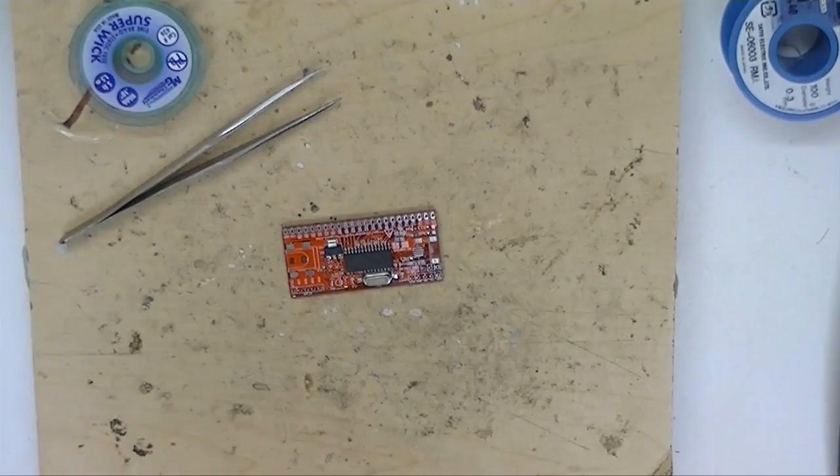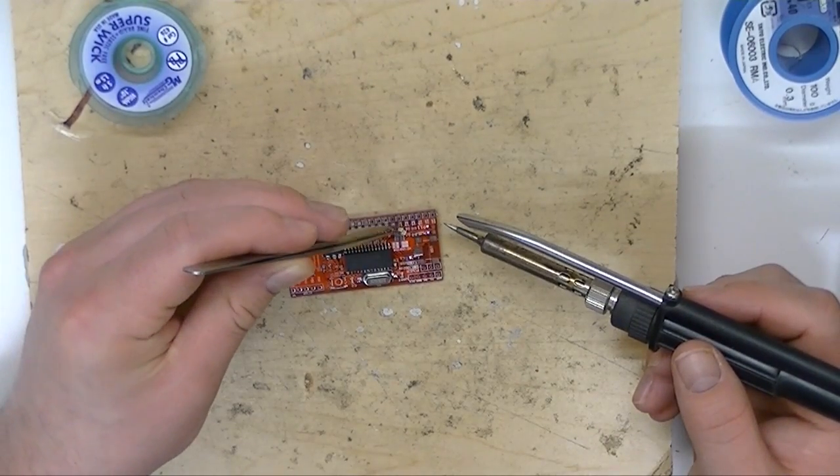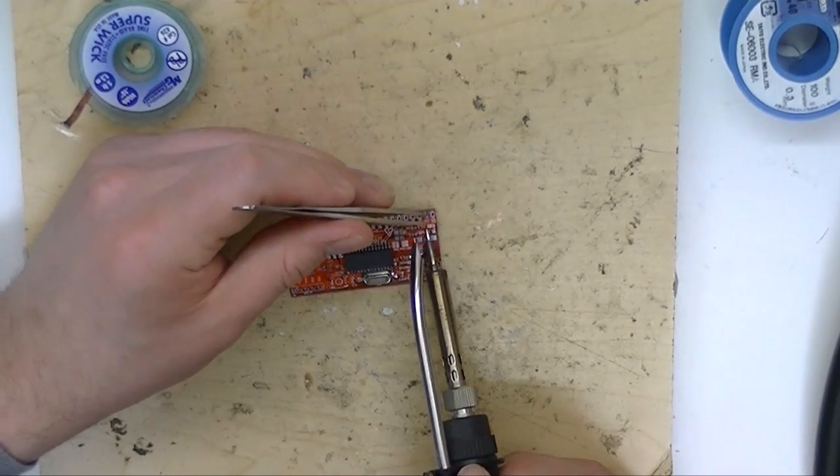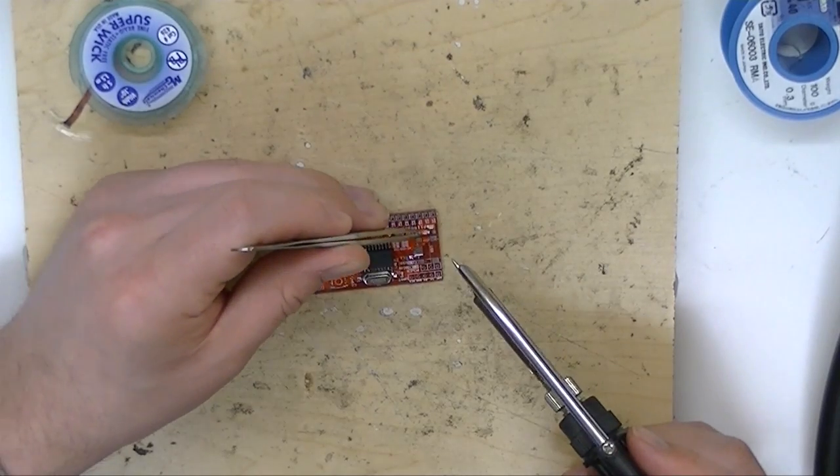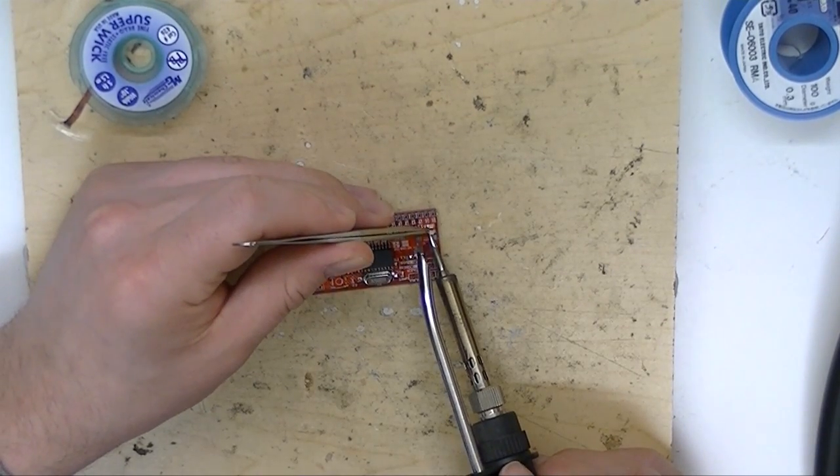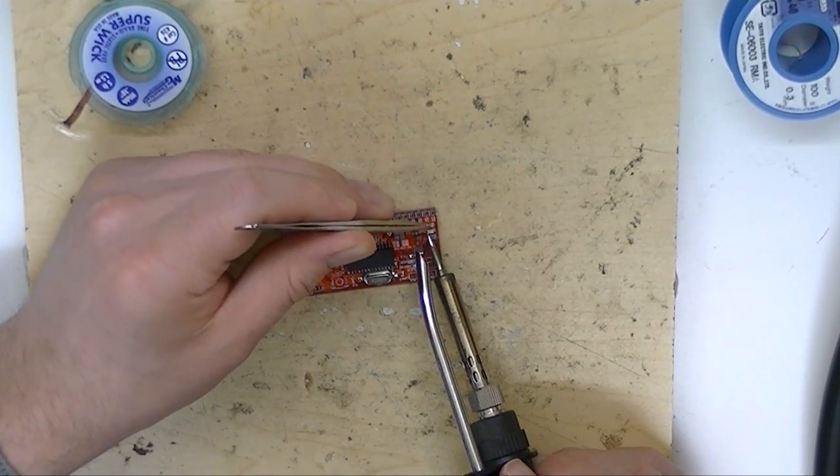So we've stuck with 0805 so they're bigger, more visible, easier to work with. The LEDs have a positive and negative side. The ground is usually marked by a little green tip like on this one.